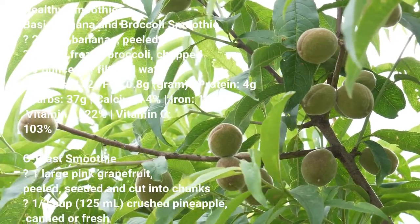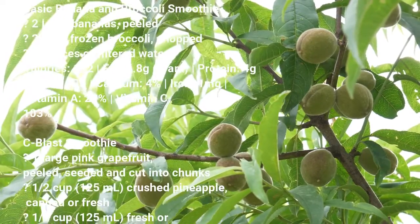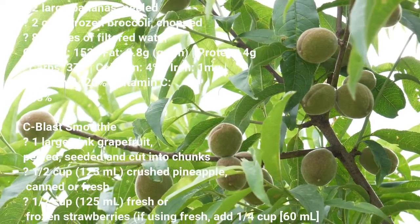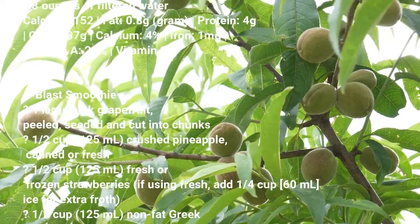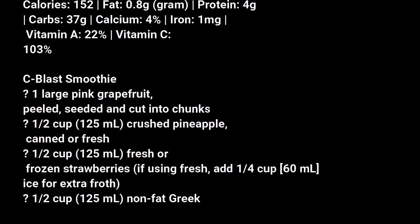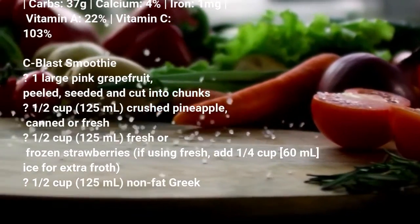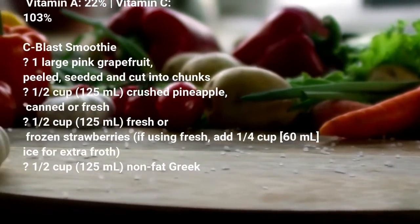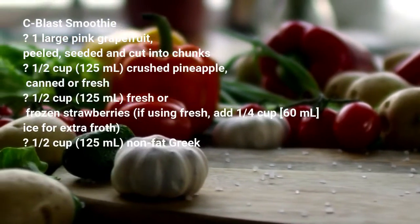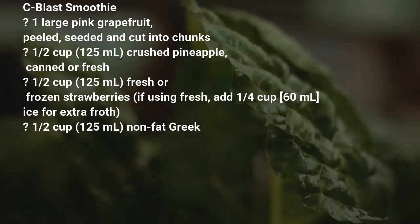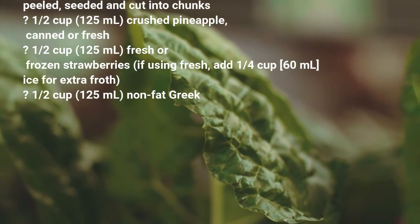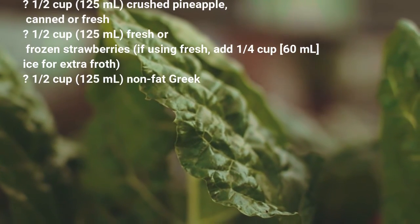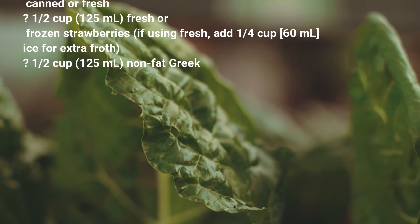16 Healthy Smoothies: Basic Banana and Broccoli Smoothie. 2 large bananas peeled, 2 cups frozen broccoli chopped, 8 ounces of filtered water. Calories 152, fat 0.8 grams, protein 4 grams, carbs 37 grams, calcium 4%, iron 1 milligram, vitamin A 22%, vitamin C 103%.